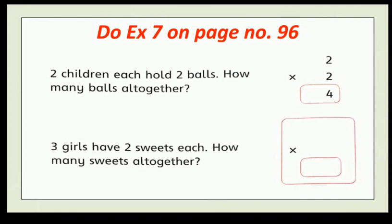Word problem: two children each hold two balls, how many balls altogether? Two multiply by two is equal to four. There are four balls altogether. And next, three girls have two sweets each, how many sweets altogether? Three times two is? Three times two is six, or three twos are six. So complete this exercise in your book.